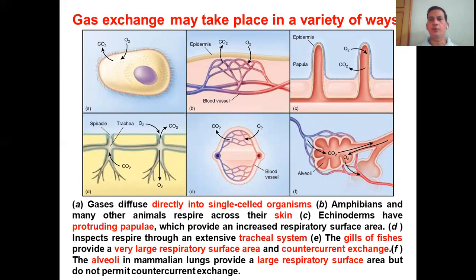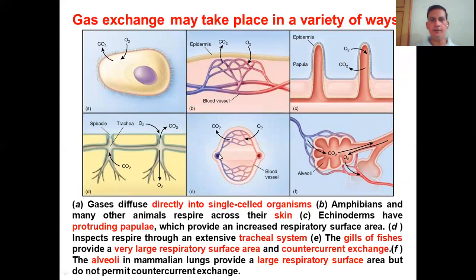The reason for these protruding structures is to increase surface area — comparing figures B and C, one can see that more surface area means more access to gases. In insects, they have a tracheal system and respire through the trachea, which is extensively distributed. In fish, there are specialized gills that facilitate the exchange of gases.